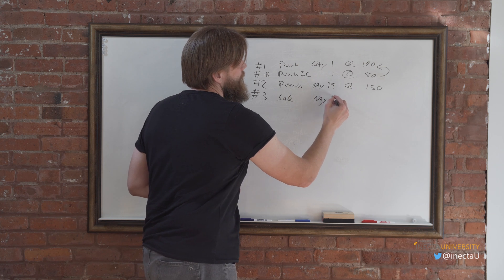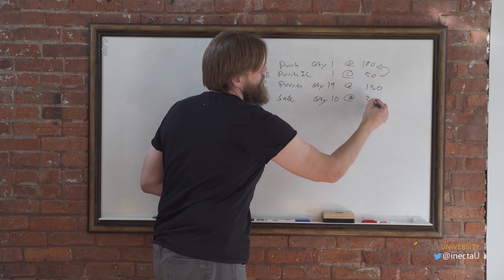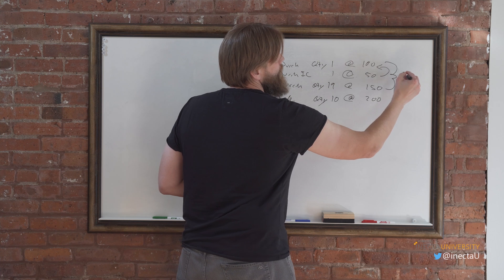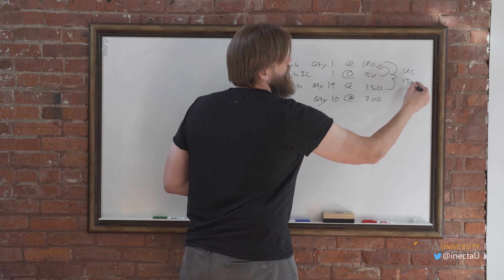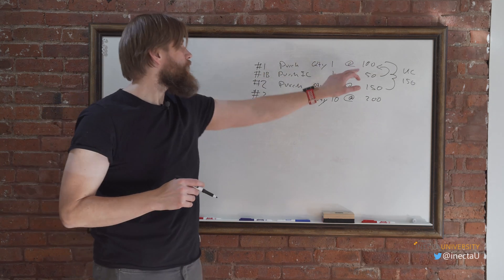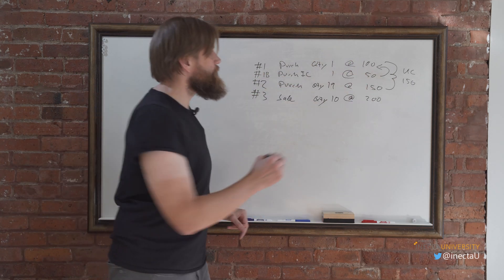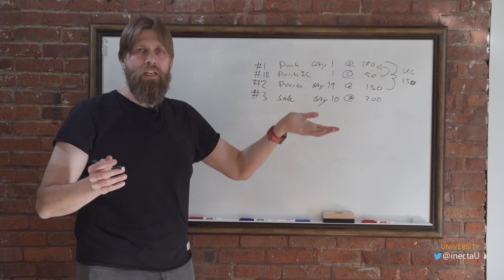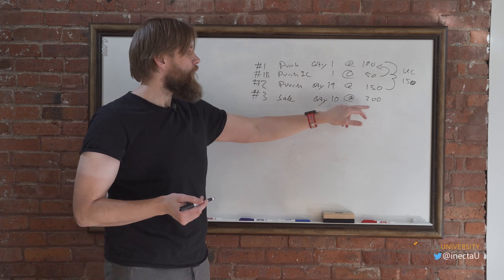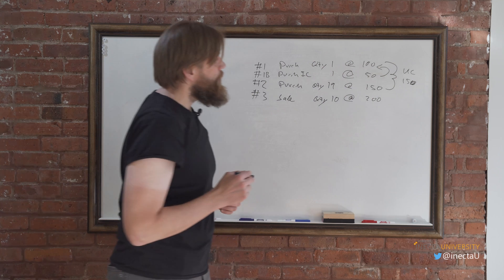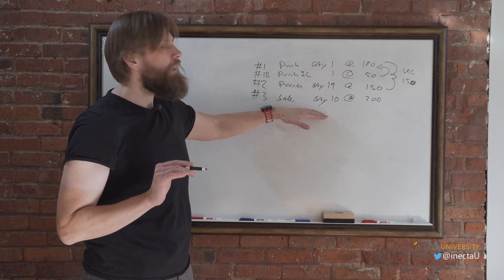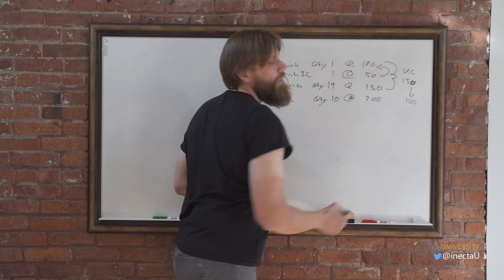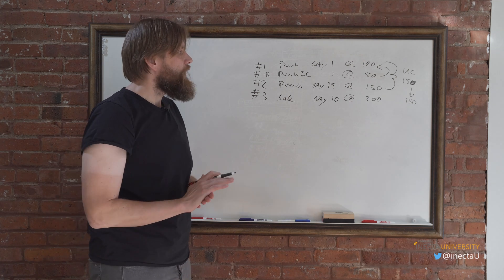Then we have a sale of quantity ten at $200. From these purchases, the unit cost is $100 plus the $50 item charge, making it $150. Combined with the 19 at $150, that's effectively 20 units at $150. So when we sell 10 at $200, the expected unit cost of the sale should be $150 — but for some reason they were not getting that.